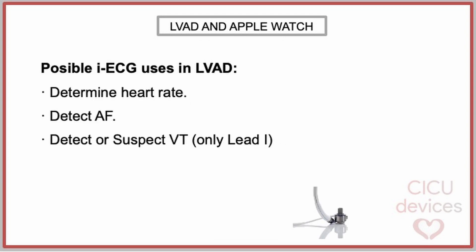The possible uses of the Apple Watch ECG could include determining heart rate — as optical pulse sensors, pulse oximeters, and blood pressure monitors are generally unreliable in patients with LVAD due to minimal or absent pulsatility — detecting episodes of atrial fibrillation, and detecting or suspecting episodes of ventricular tachycardia.